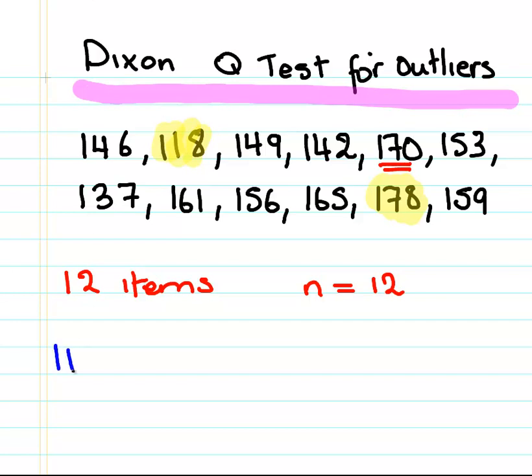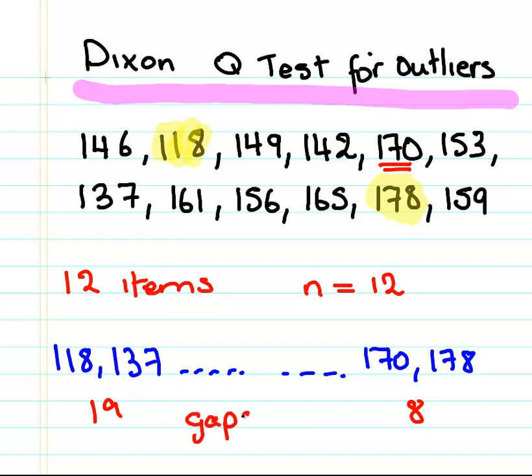So it might be handy to write it out. 118, 137, 170, 178. So that is a gap there of 19. That's a gap of 8, essentially the difference between the two numbers. So we're interested in these gaps. That's how this test works, works on the basis of those gaps.